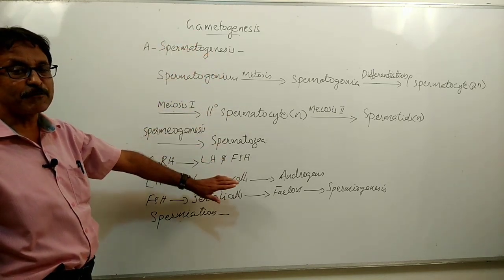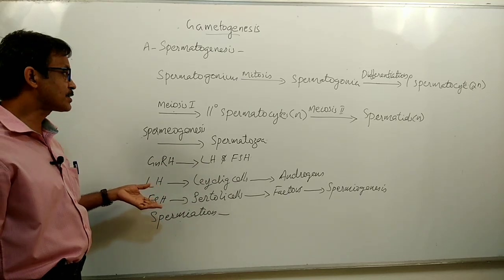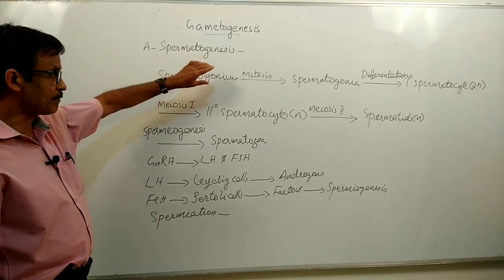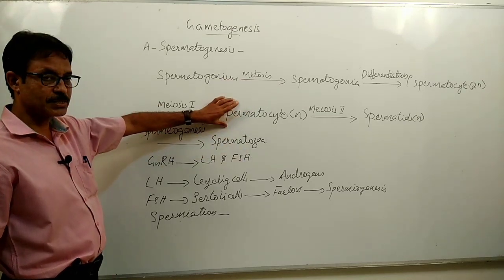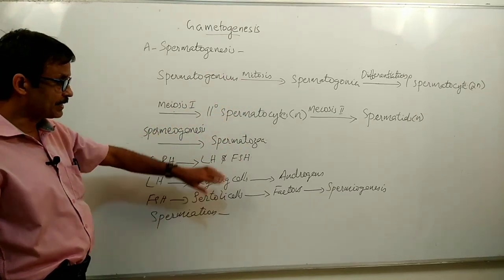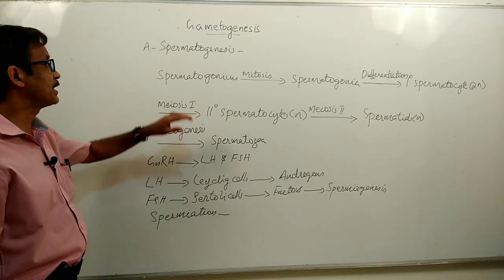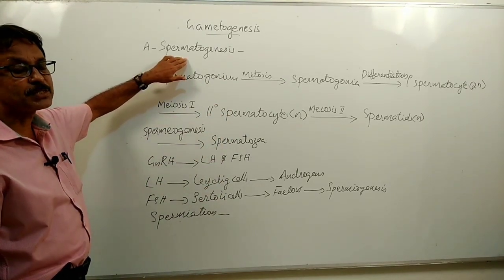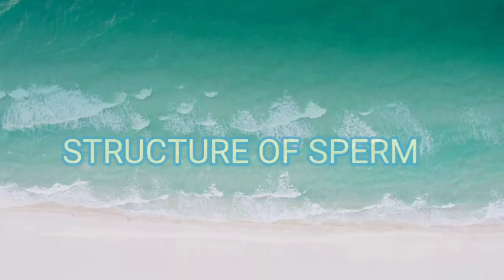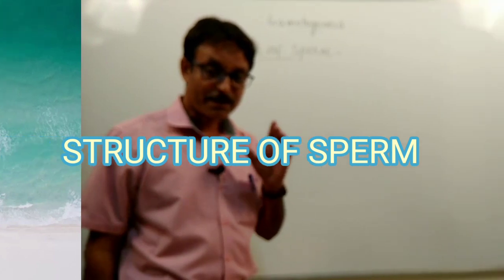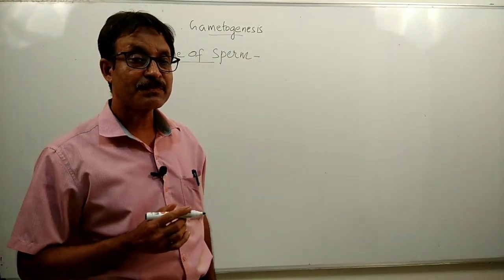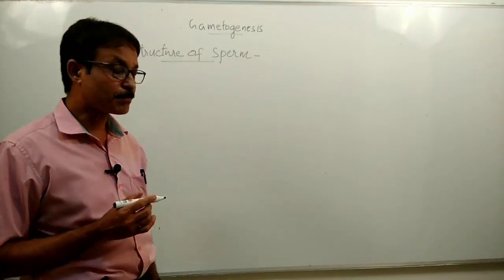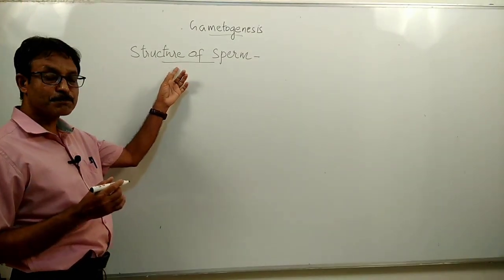At puberty, under the influence of hormones, spermatogenesis begins — firstly by mitosis, then by meiosis. You need to know these different events in spermatogenesis. By spermatogenesis, sperms are developed. Next, we have to know the structure of sperm.